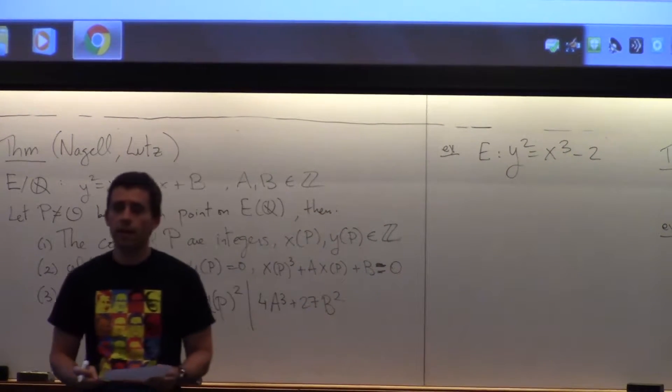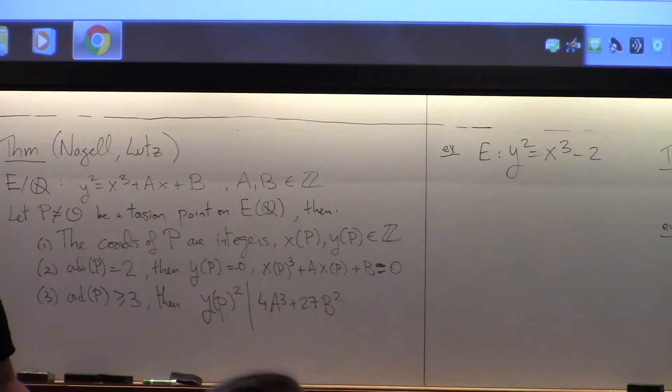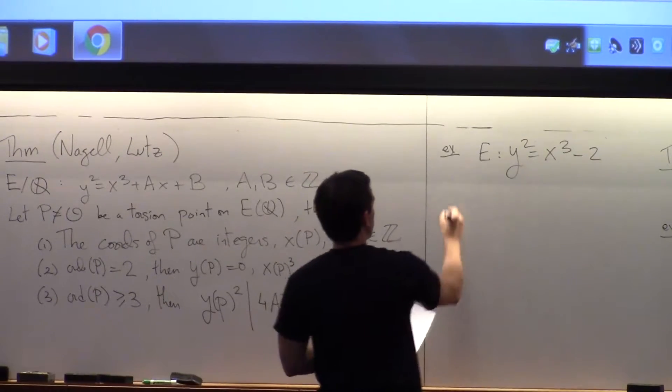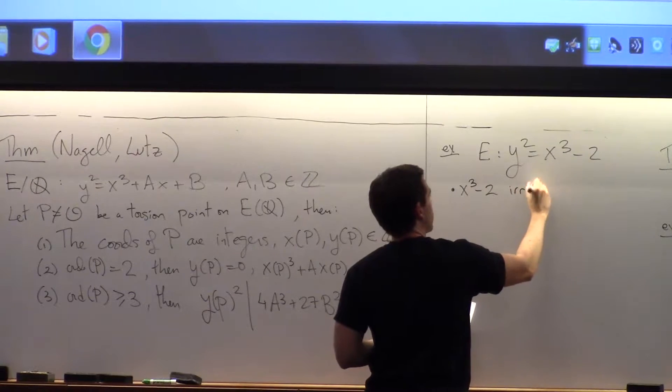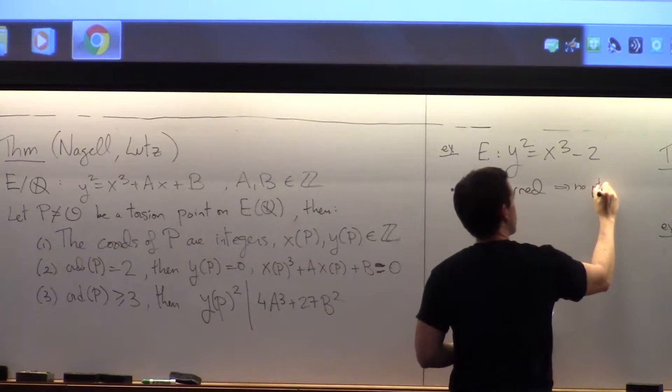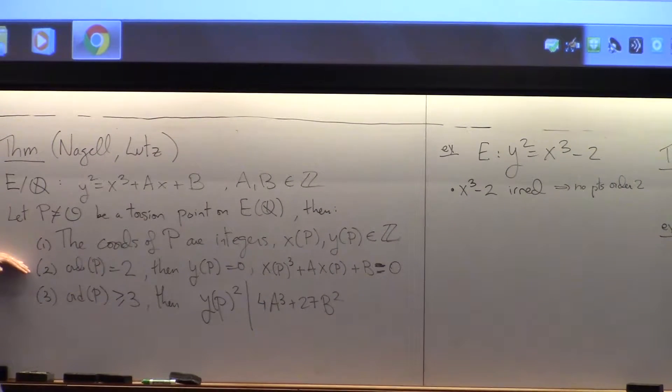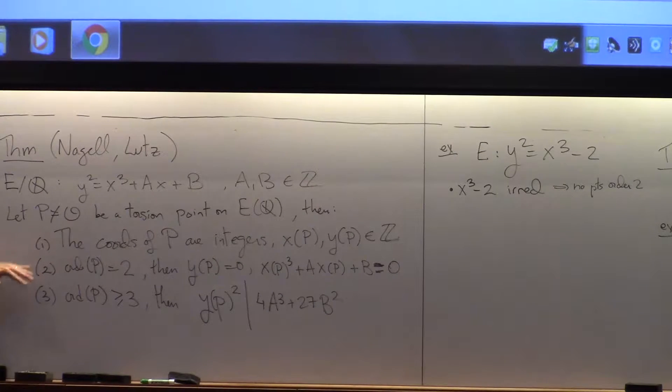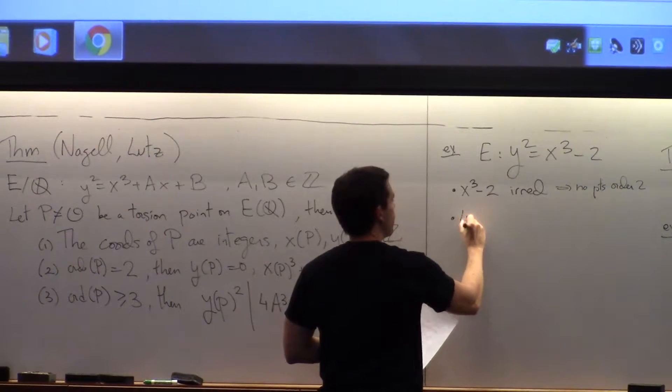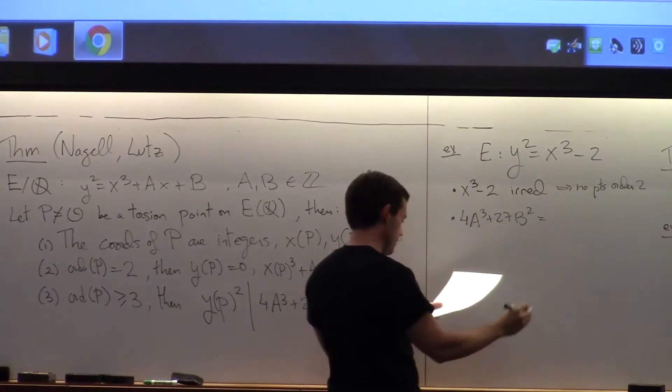Let's say, for instance, the curve we claimed before that there was just one point of infinite order. I'm talking about torsion, but I'm actually going to prove to you that (3,5) is the point of infinite order. How? Well, I'm going to prove that there are no points of finite order. How do we do that? So first of all, x³ - 2 is irreducible, so there are no points of order 2.